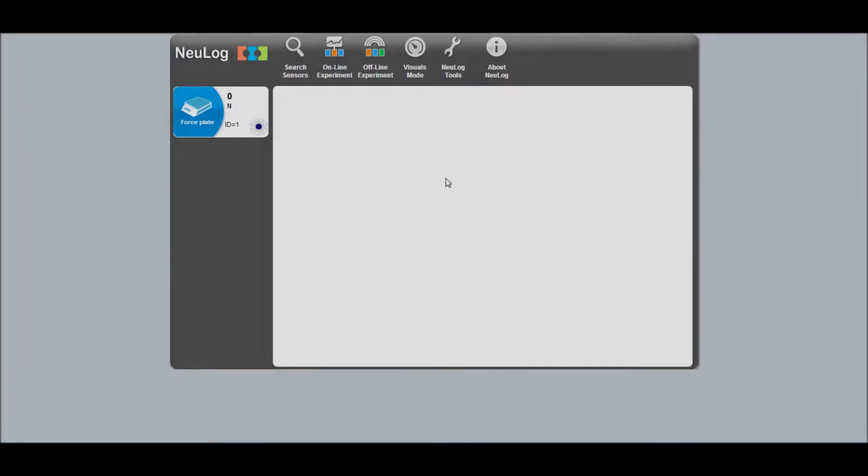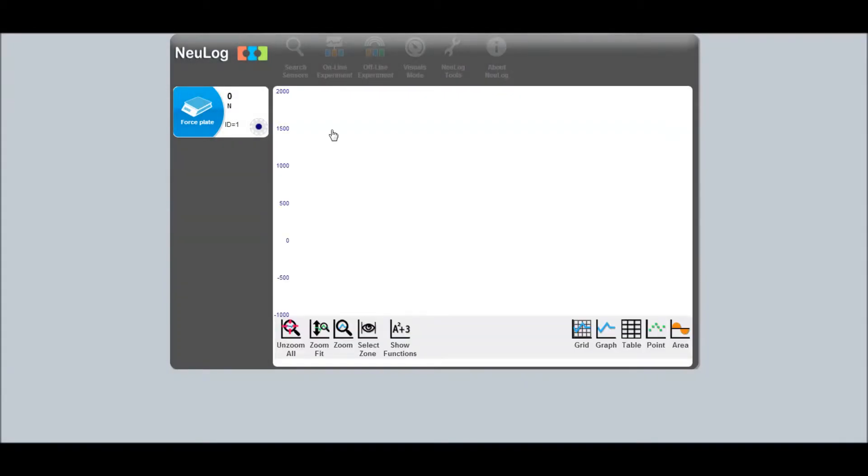Before we begin collecting data, we must first configure the NeuLog software for our experiment. Once your force plate sensor has been detected, click online experiment and then click on the experiment setup button and set the experiment duration to 10 seconds and the sampling rate to 100 per second.